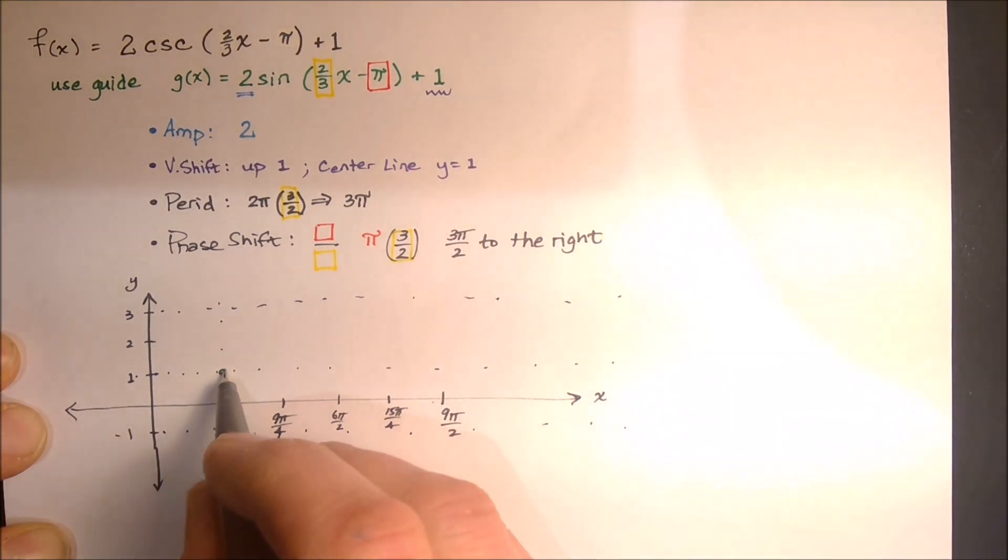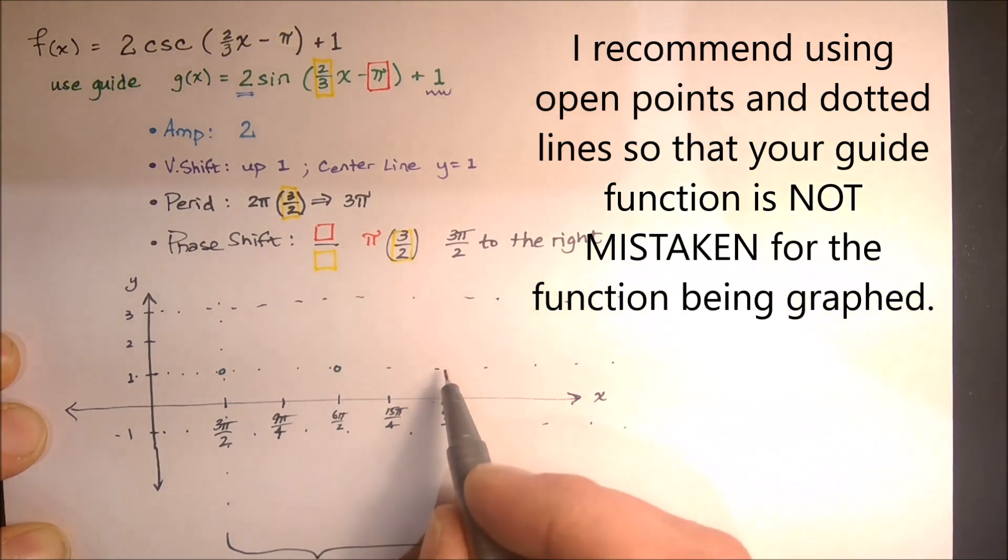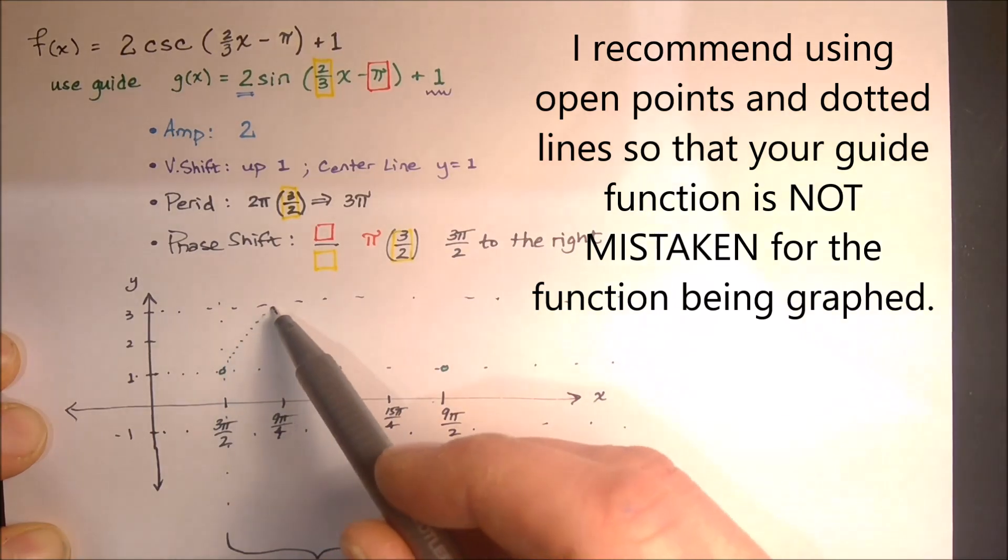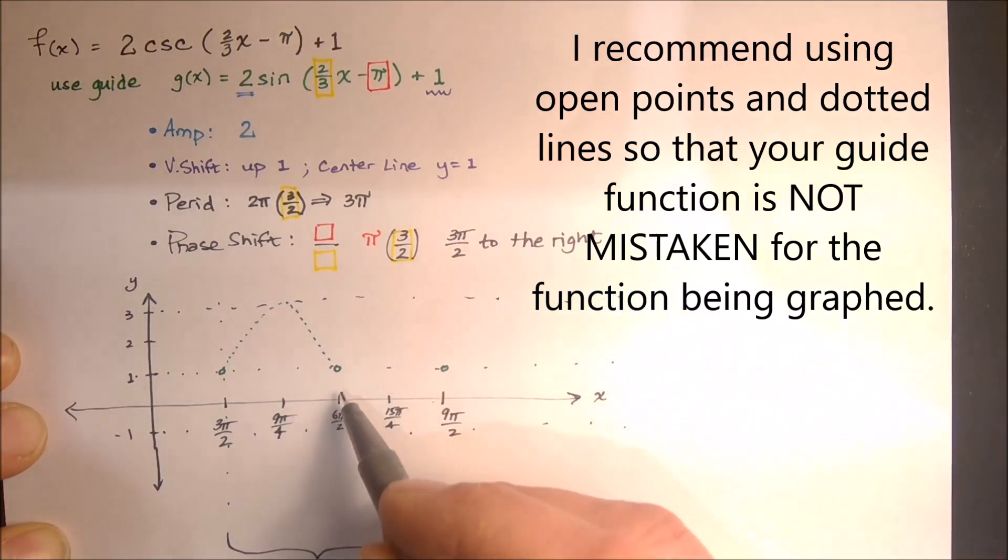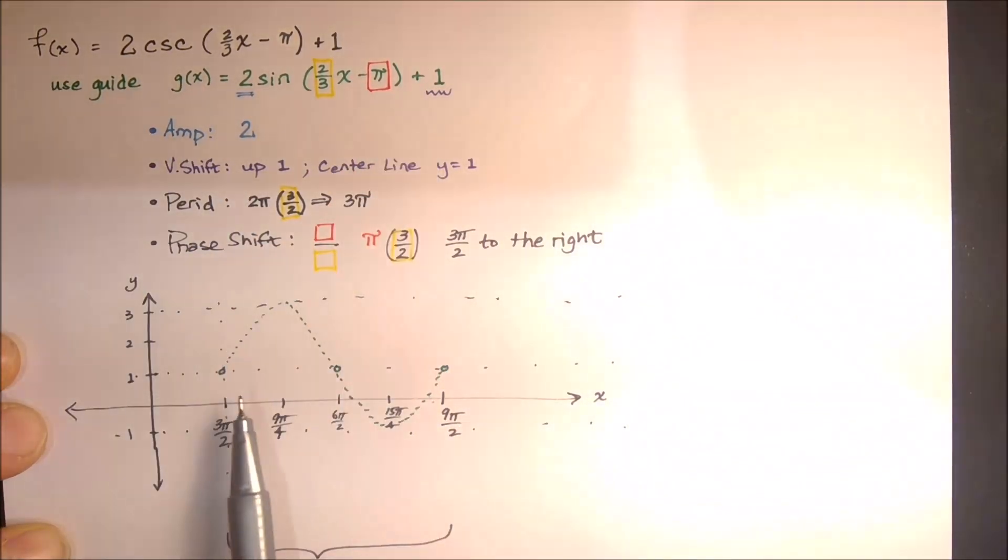So we've got this spot that's going to graph our entire guide function. We know the sine starts in the center line, hits the center line in the middle, and ends at the center line. So I'm going to draw a dotted, this is my guide function. Again, I'm dotting it because it's a guide, it's not the actual function I'm supposed to be graphing. This is g of x, and I'm using the green color so you can see that. Here's our guide function.